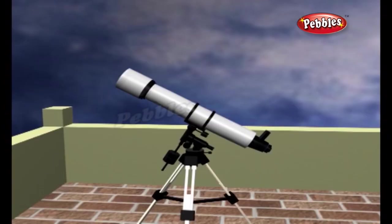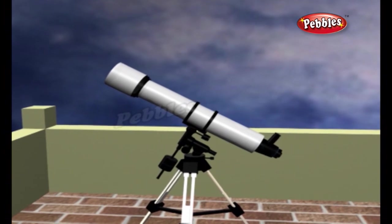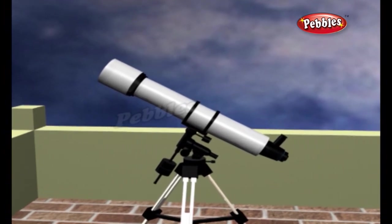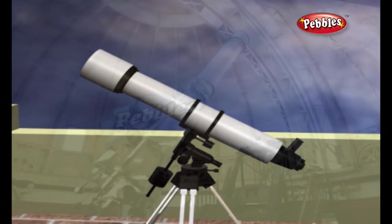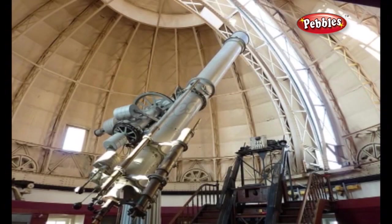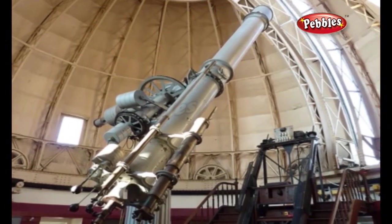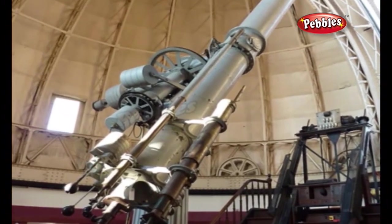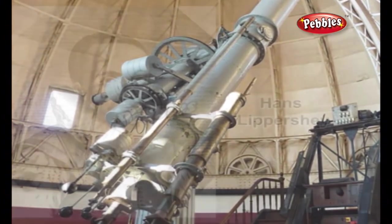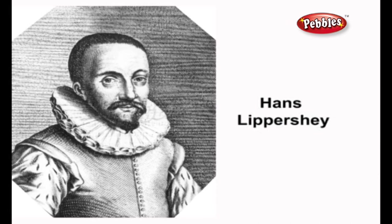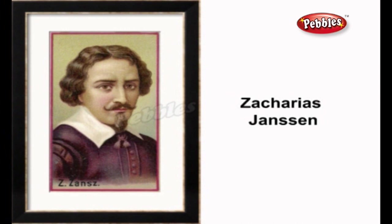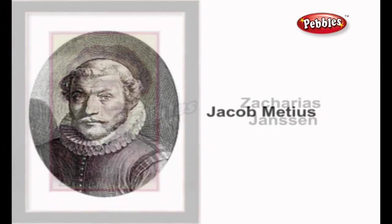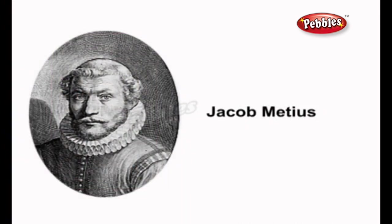A telescope is an instrument designed for the observation of remote objects by the collection of electromagnetic radiation. The earliest evidence of working telescopes were the refracting telescopes that appeared in the Netherlands in 1608. Their development is credited to three individuals: Hans Lippershey and Zacharias Janssen, spectacle makers in Middleburg, and Jacob Metius of Alkmaar.